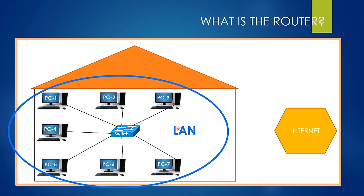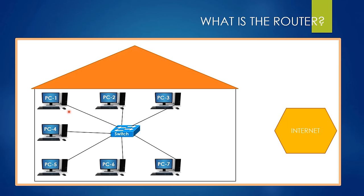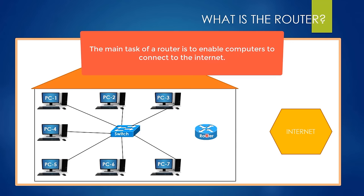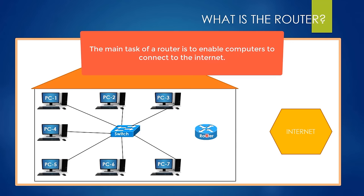The main question is: how do we connect these computers to the internet? This is where the router device comes into play. The main task of the router is to enable computers to connect to the internet. Without a router, it is impossible for us to connect to the internet. In order to provide this connection, we must first connect this switch to this router using a copper cable.